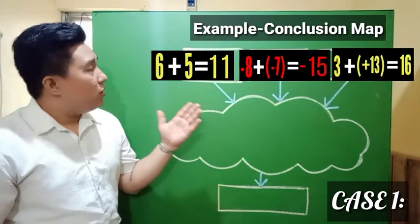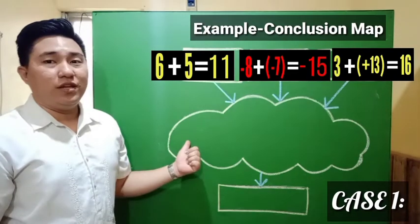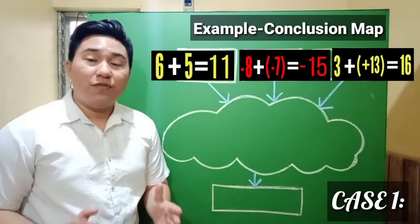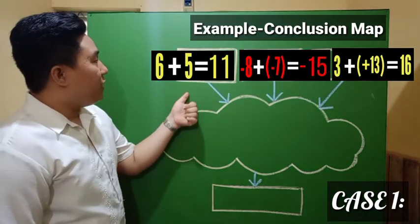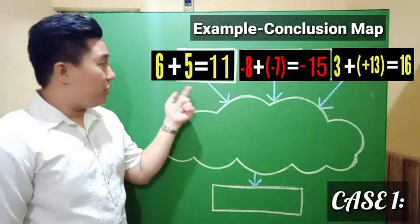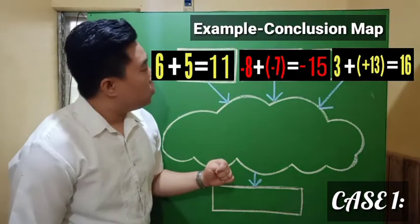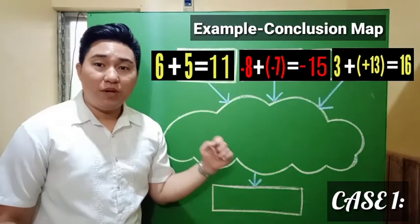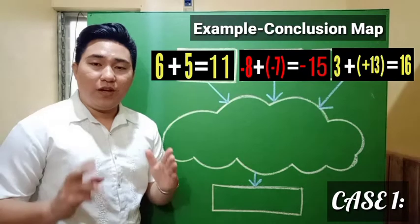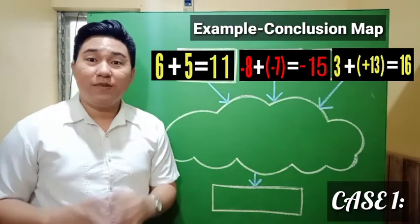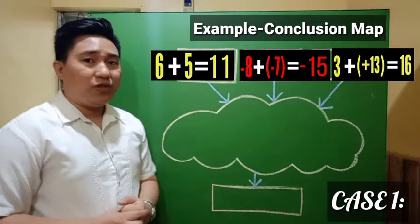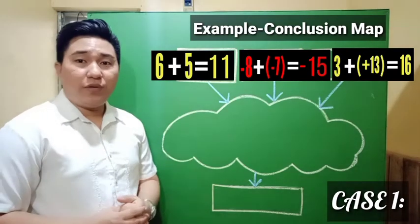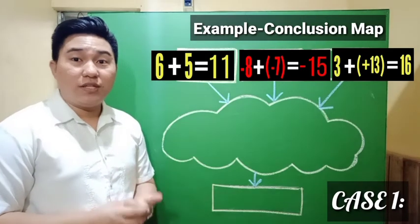From these three examples, let's observe the pattern and investigate to generate a conclusion. For example one, we have two positive numbers being added — that's why it's both yellow. For example two, we have two negative numbers being added — both red. For example three, two positive numbers — both yellow. Observation one: the numbers being added have the same sign. Observation two: the result is the sum of the two numbers.